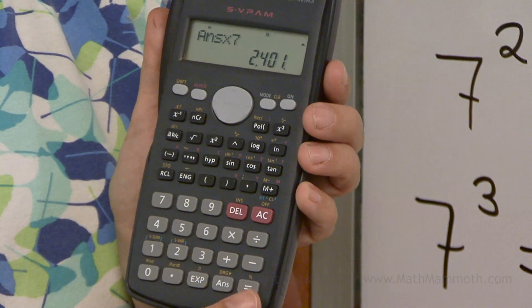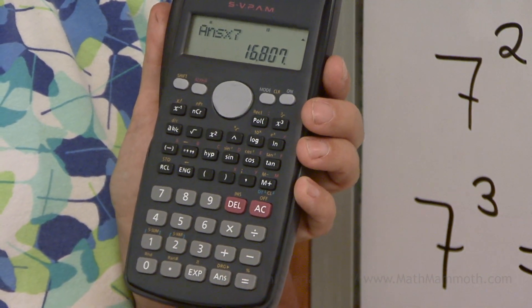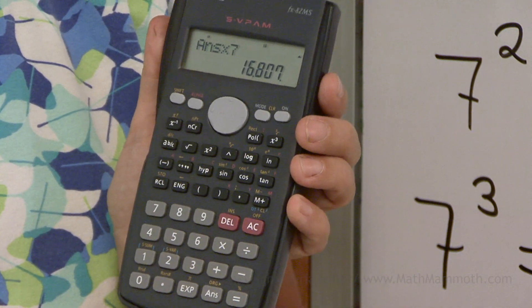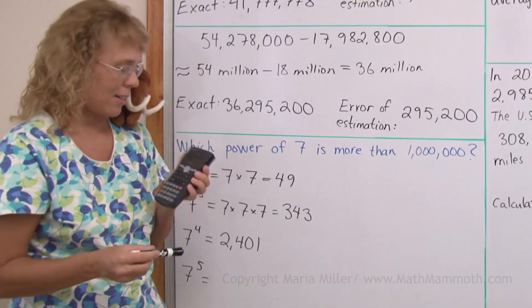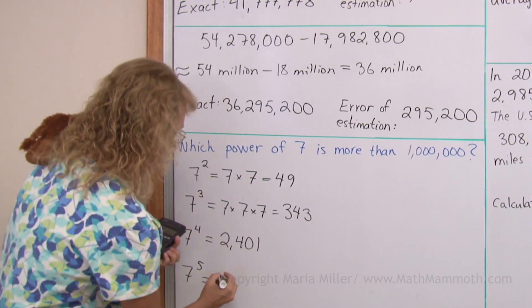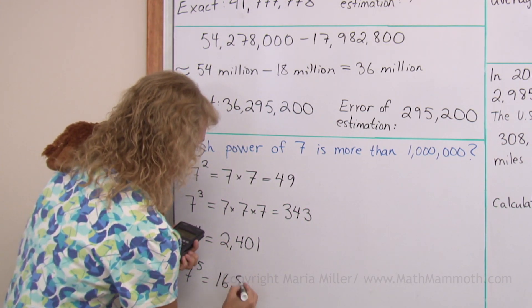And then again, I press equals. And I get my previous answer times seven, which is now the next power of seven. This is 16,807.